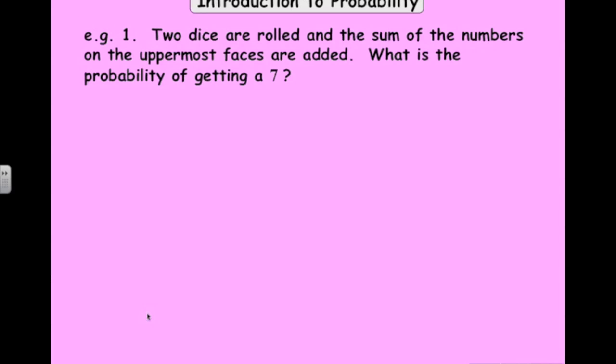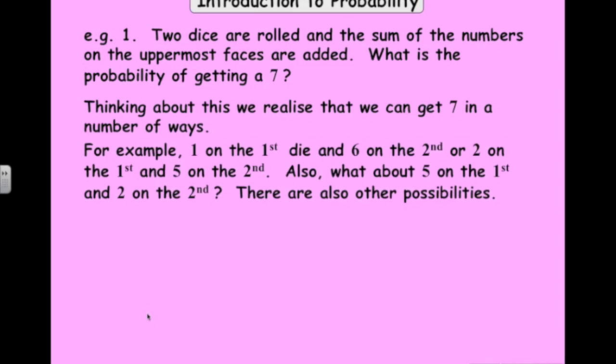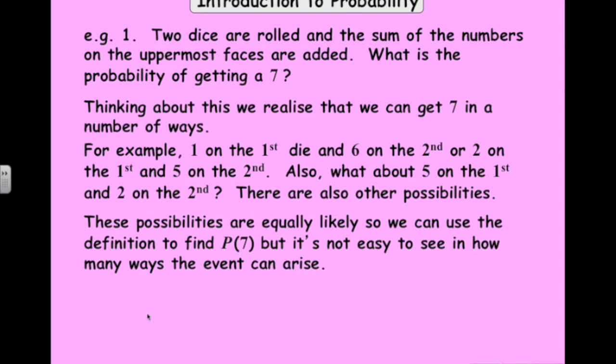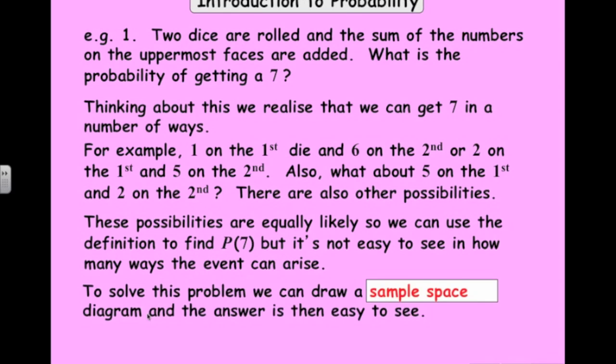Another way that we look at probability is by drawing out what we call the sample space. So here's a really basic problem that you would have seen last year. Rolling two dice now. Adding them together and we want to know the probability of getting a total of 7. We could start to list them out and think about it. We could get 1 on the first die and 6 on the second. And start to list them out. It's much easier to draw a diagram and look at what we call the sample space. So let's go ahead and do that.